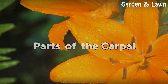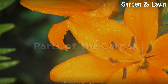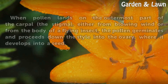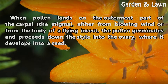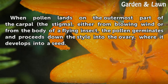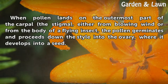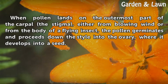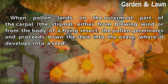Parts of the Carpel. When pollen lands on the outermost part of the carpel — the stigma — either from blowing wind or from the body of a flying insect, the pollen germinates and proceeds down the style into the ovary, where it develops into a seed.